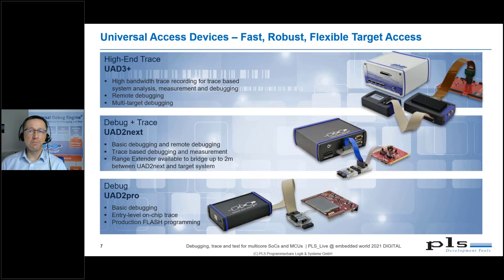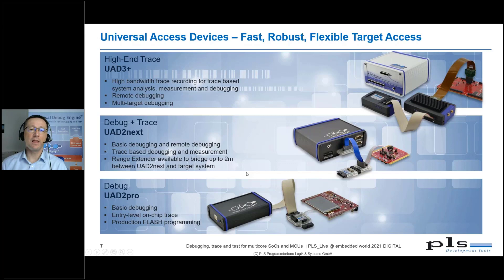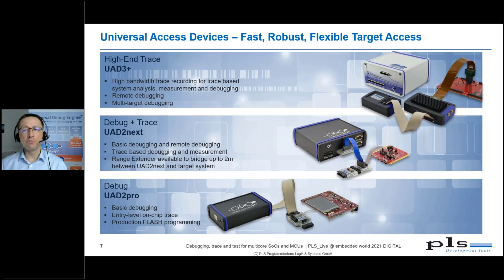The different debug interfaces implemented by the particular hardware vendor for the controllers are supported by target-specific debug adapters that are attached to the UADs. The base device in our family is the UAD2 Pro, shown at the bottom of this slide. It can be used for debugging and test tasks. It has a universal debug interface connector for our target adapters, as well as a DSUB connector for CAN, so this device can also be used to record CAN messages or use CAN as a physical layer for debugging. The UAD2 Pro connects to your PC via USB.